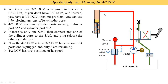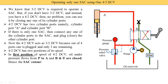Now we understand the first position of the single acting cylinder. In the first position of the spool of the 4/2 DCV, oil under pressure flows from P to A, and B to T are closed. Hence the single acting cylinder is extended. You can see the P port is connected with A — oil comes from the reservoir to the pump, pressurized oil arrives at port P, flows from P to A, enters the single acting cylinder, and the pressurized oil applies force on the piston. Due to this force, the piston starts to move in the downward direction — that means it is called extension.